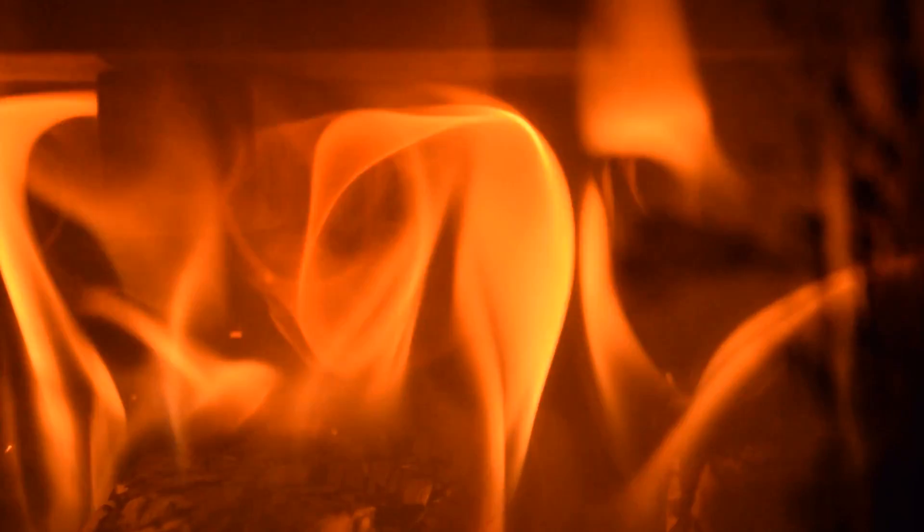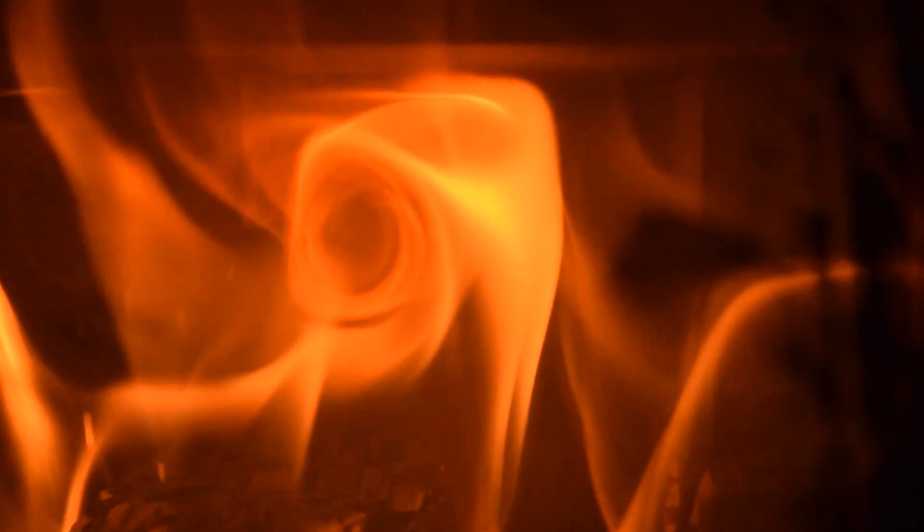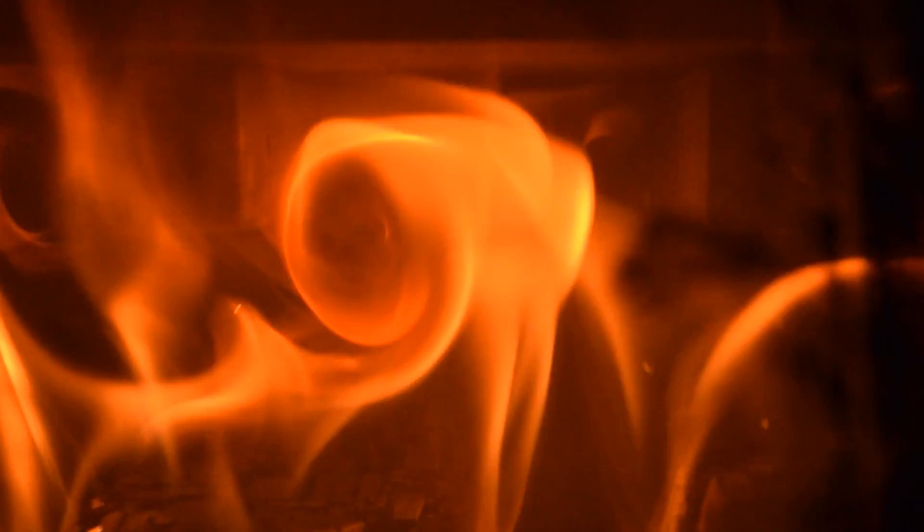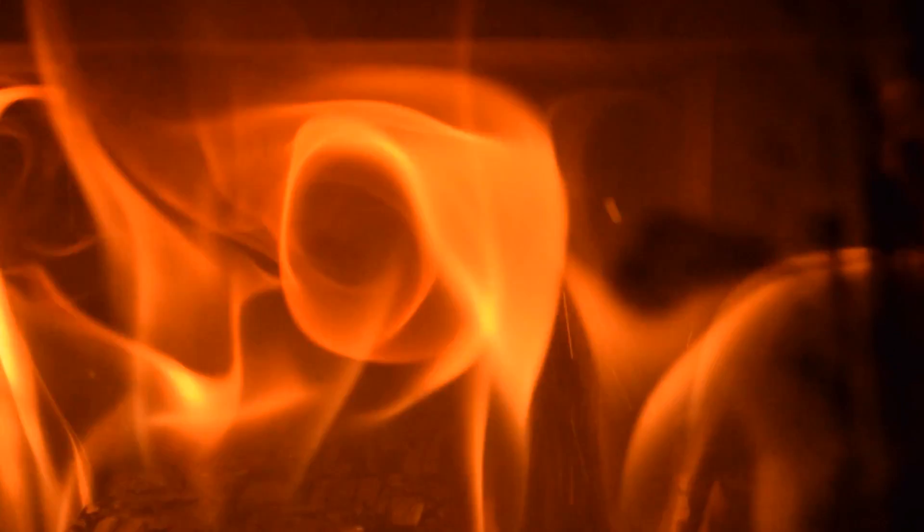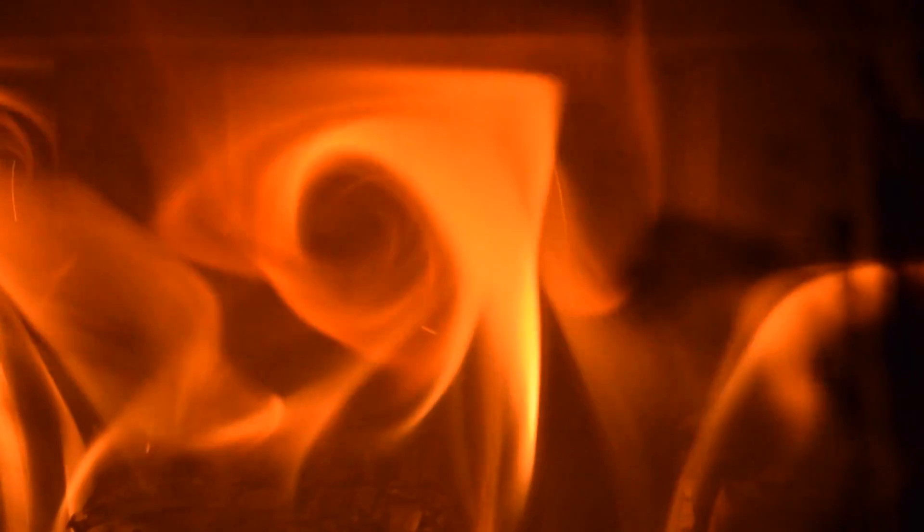As this little vortex spins, it stirs off leftover fuel from the primary burn and the new oxygen that we're adding, mixing them together and burning off any leftover soot and carbon monoxide, so the exhaust gases from the stove are as clean as possible.